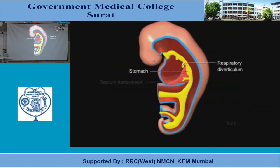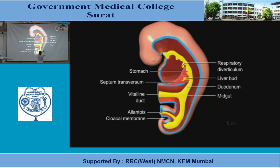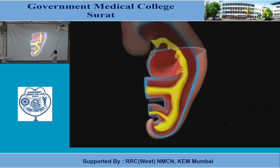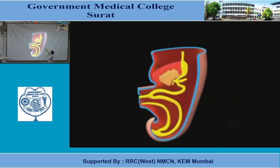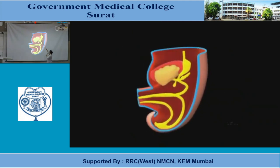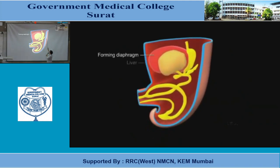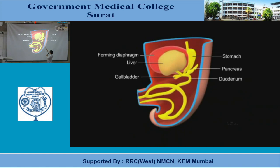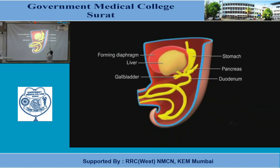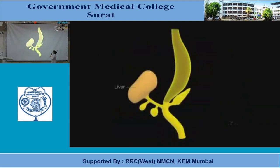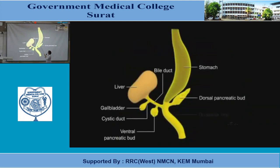Now you can see the development of the liver bud. This is the septum transversum. The liver develops here. The ventral pancreatic bud arises here. This bud will rotate. You can see: liver, gallbladder, ventral pancreatic bud, dorsal pancreatic bud, and stomach.